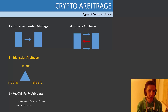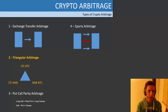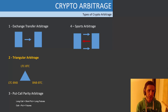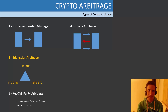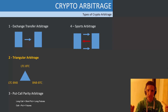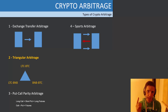The first type of arbitrage we spoke about is where you can buy a coin on the ask and sell it at the bid on two different exchanges. So buy on this exchange, sell on this exchange, and the gap is your profit. That's arbitrage number one.